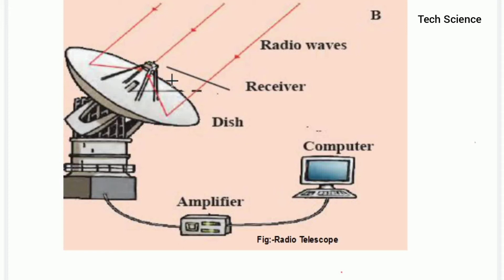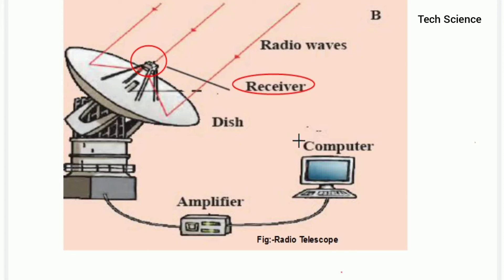The receiver is positioned at the point where all the rays converge — that is, at the focus. The function of the receiver is to receive all the waves which are reflected by the parabolic antenna dish. All the waves come into the receiver at the focus point.